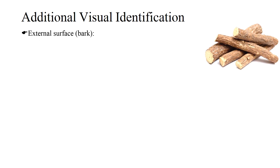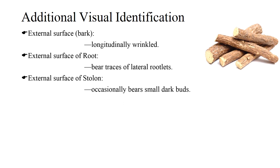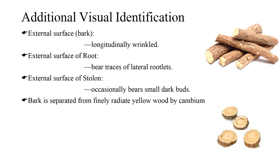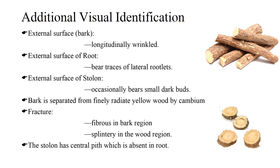Additional visual identification: the external surface of liquirice is longitudinally wrinkled. In case of root, the external surface bears traces of lateral rootlets, whereas in case of stolons, it occasionally bears small dark buds. The external bark is separated from finely radiated yellow wood by cambium. The fracture of liquirice is fibrous in the bark region and splintery in the wood region. The stolons of liquirice have a central pith, which is absent in case of root.